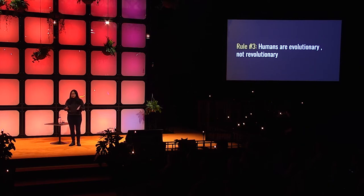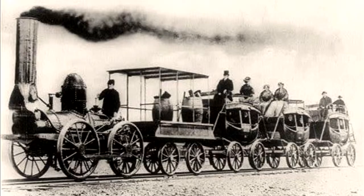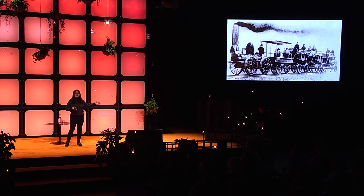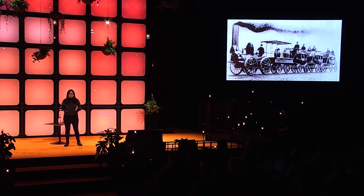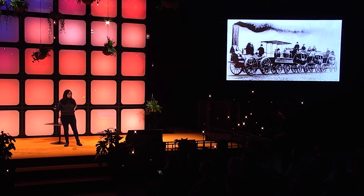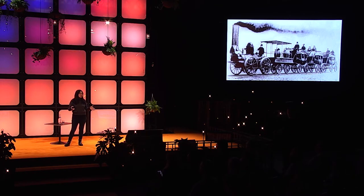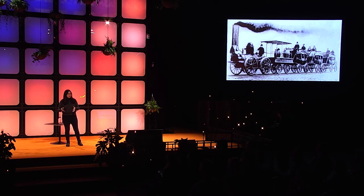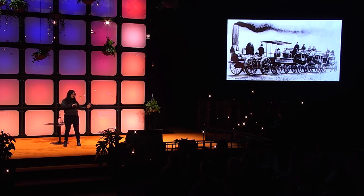Rule number three: humans are evolutionary, not revolutionary. An early envision of the first rail car was basically just a bunch of horse-drawn carriages pulled together. In free-to-play game design, we talked about keeping one-third innovative. And that innovation could be something as boring as a business model. We kept two-thirds of the product very familiar and played with the business model as the innovative third.